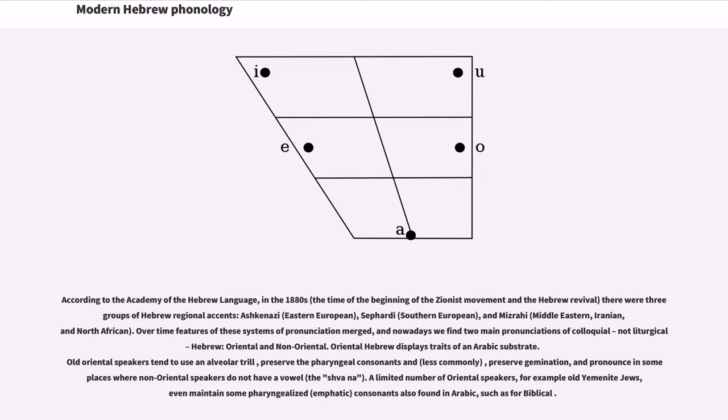Ashkenazi (Eastern European), Sephardi (Southern European), and Mizrahi (Middle Eastern, Iranian, and North African). Over time features of these systems of pronunciation merged, and nowadays we find two main pronunciations of colloquial, not liturgical Hebrew: Oriental and non-Oriental.